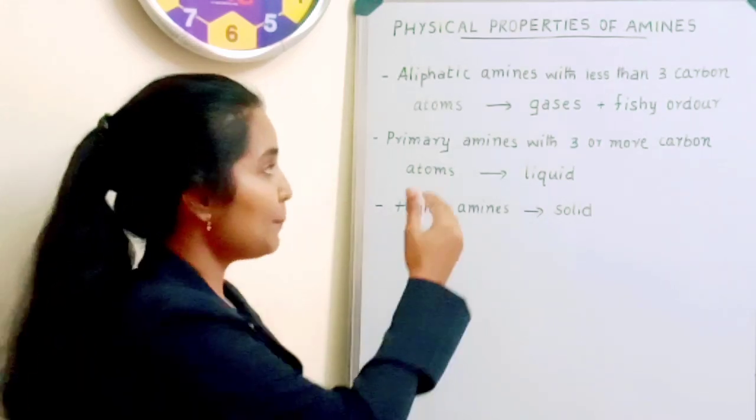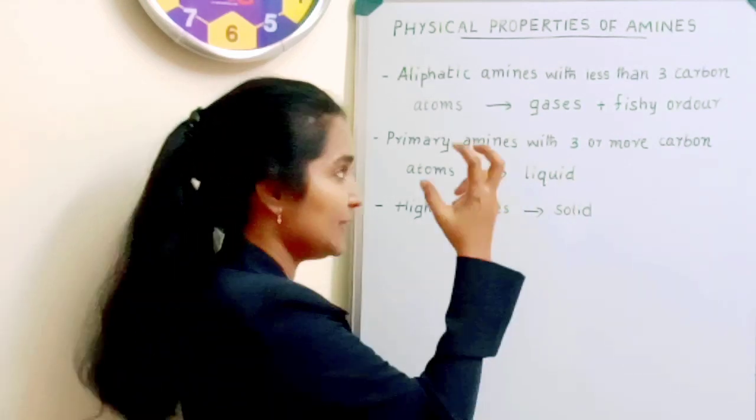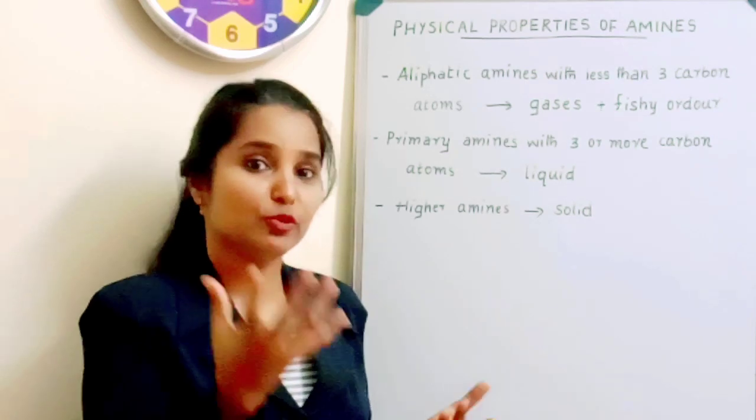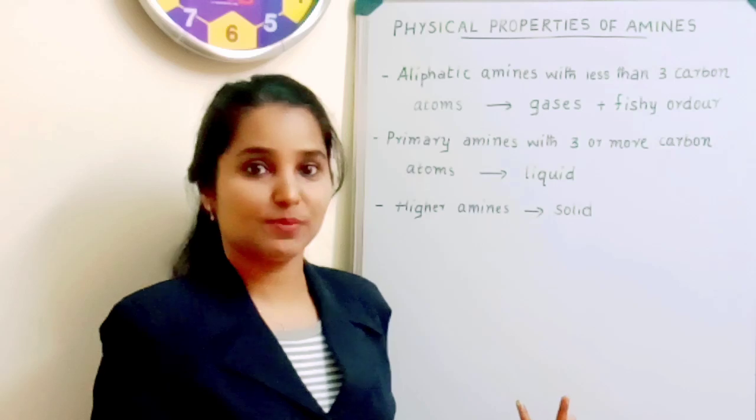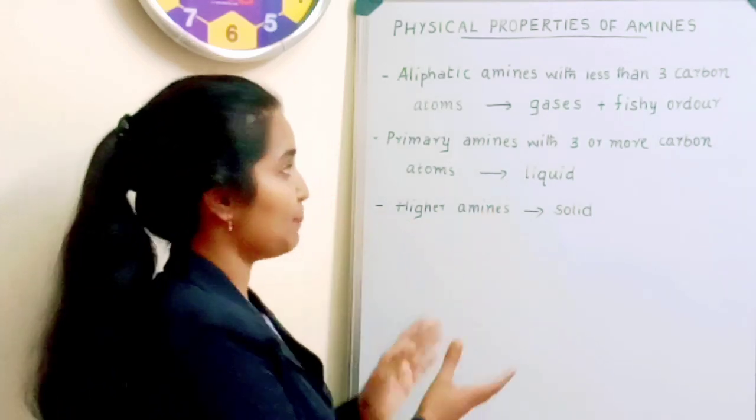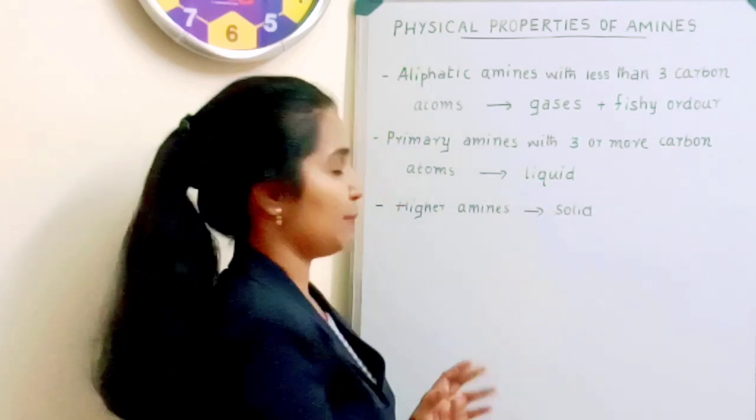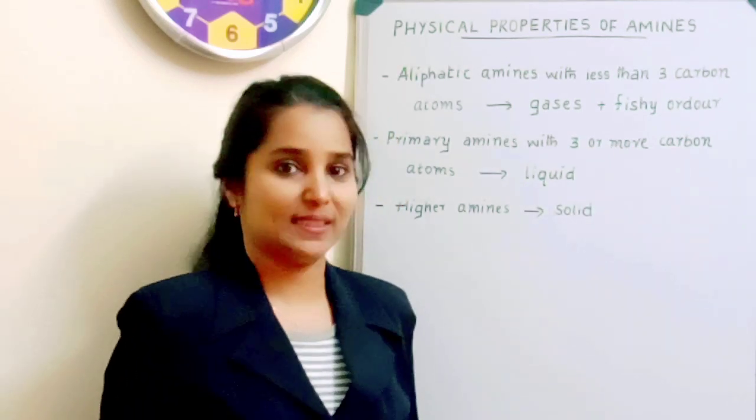And then primary amines with 3 or more carbon atoms. If it is a primary amine, that means 2 hydrogen atoms in amine are substituted by 2 alkyl groups. So, if it is a primary amine which is having 3 or more carbon atoms, that amine will exist as liquids.